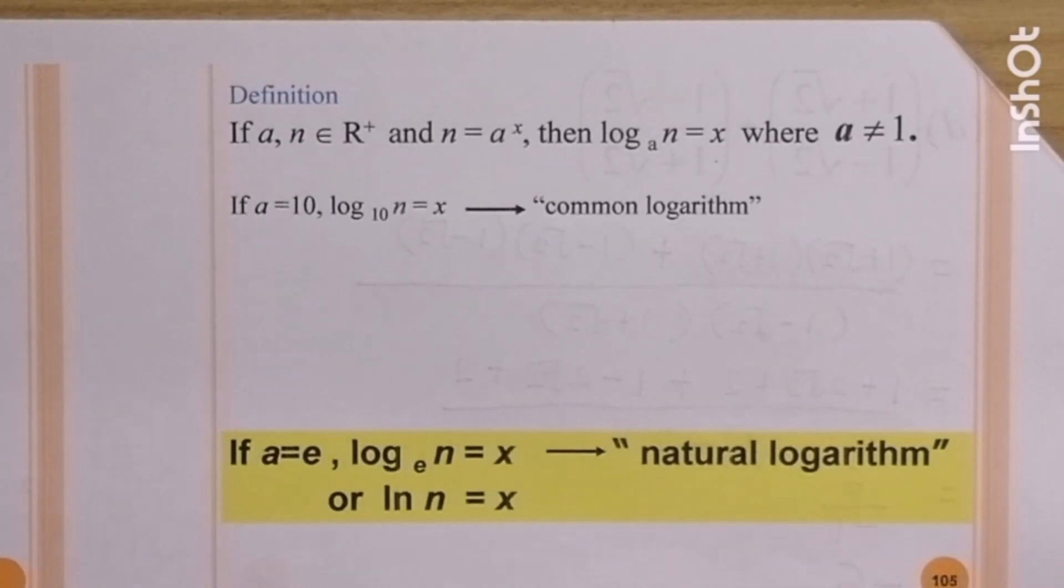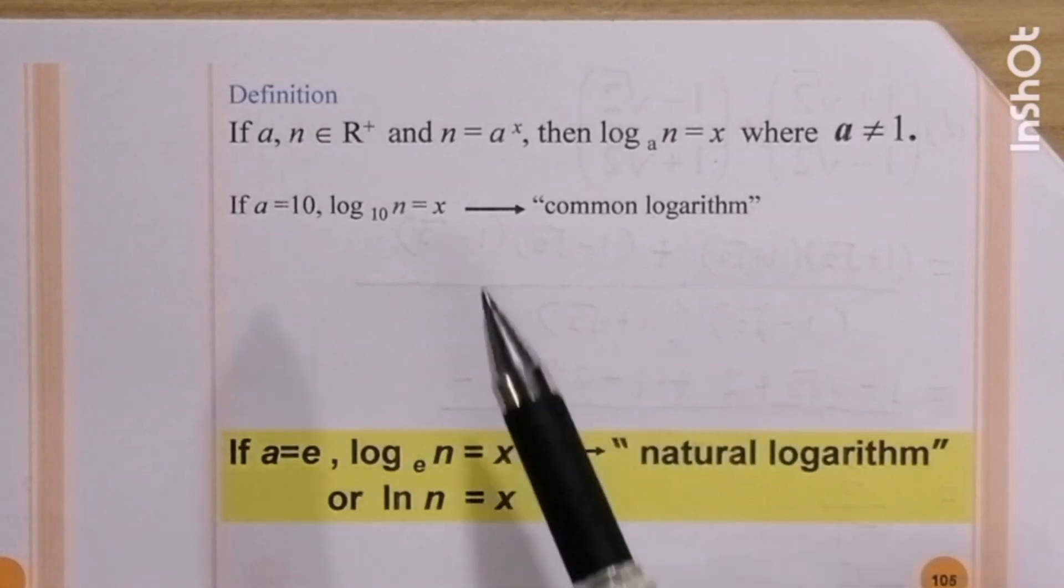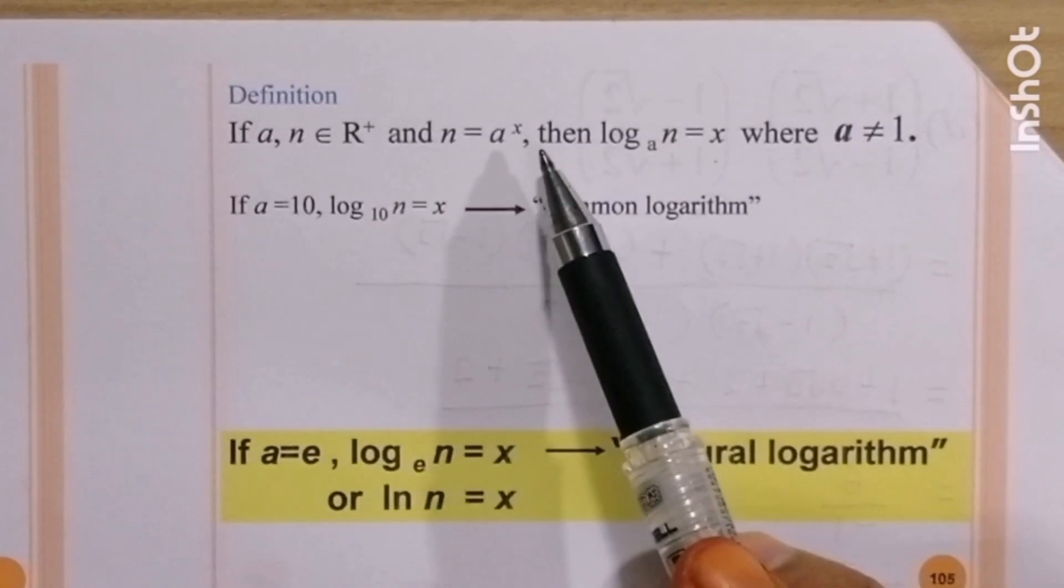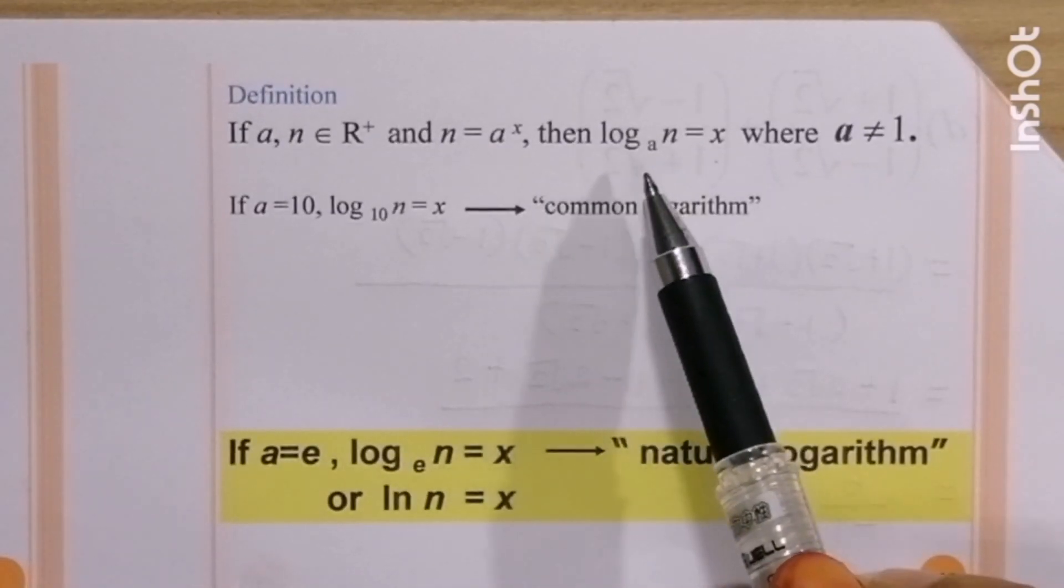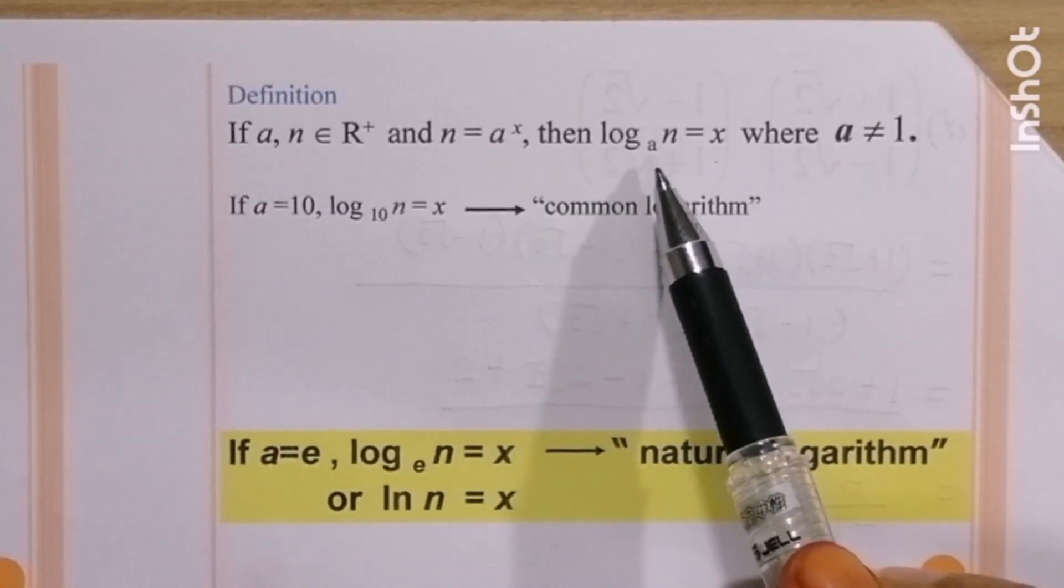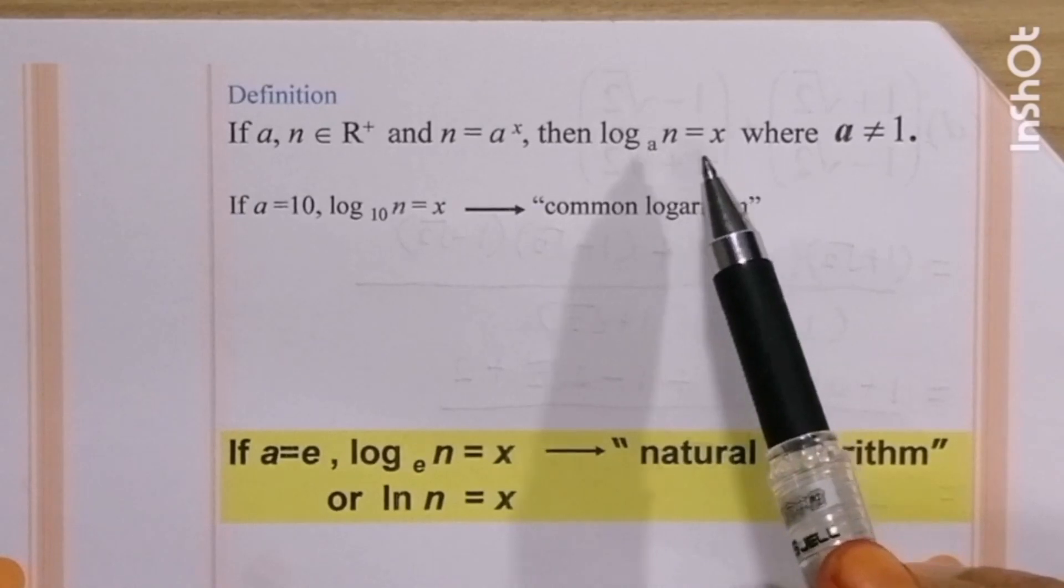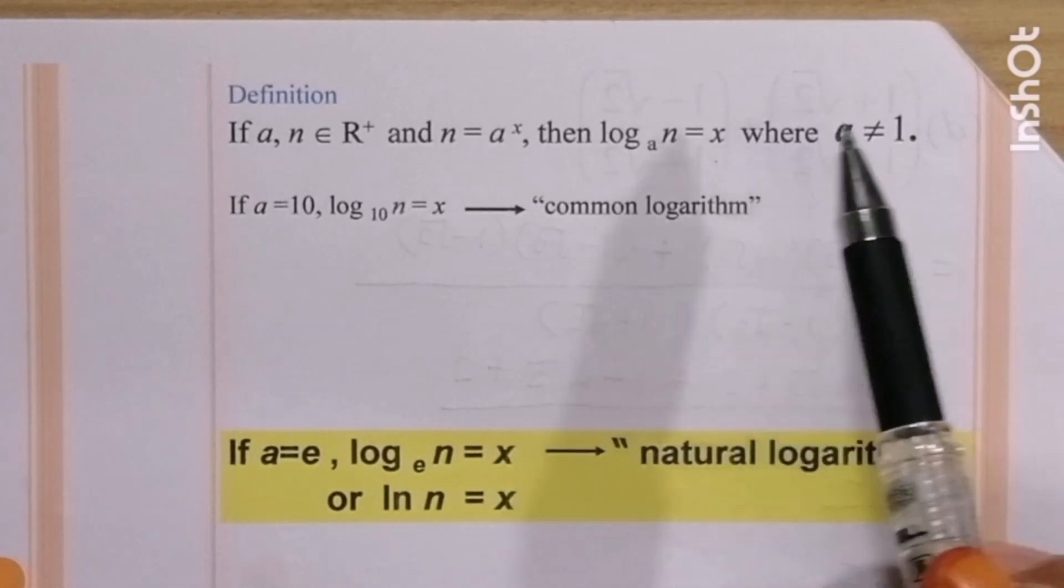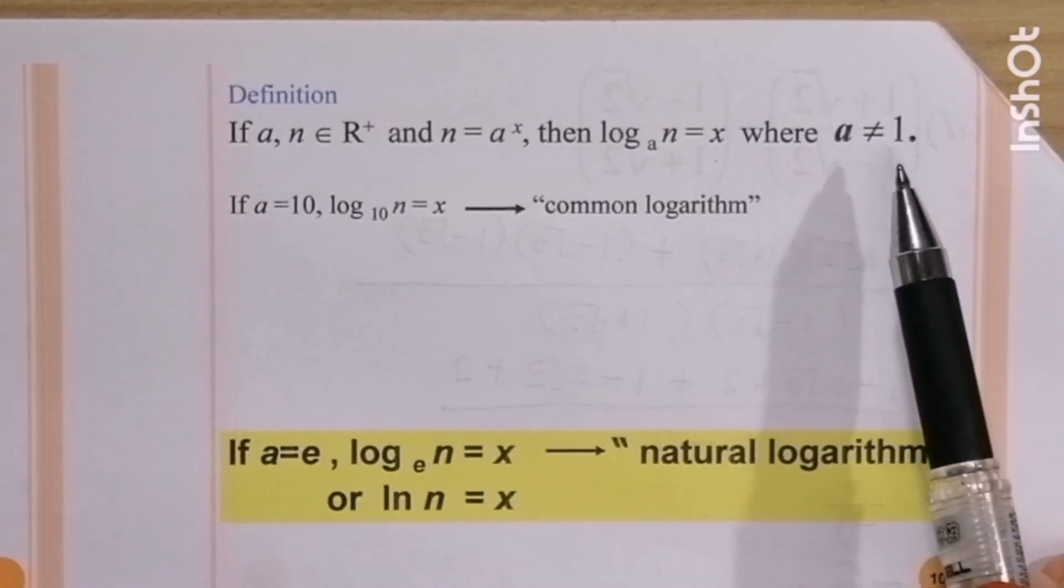If a, n are elements of integer positive, and n equal to a to the power of x, then taking log base a to both sides, we get log n base a equal to x, where a is not equal to 1.